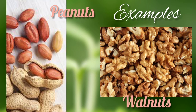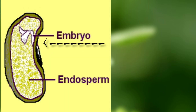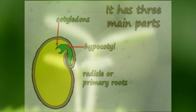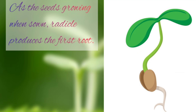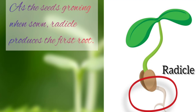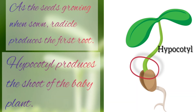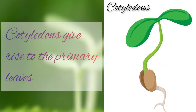Look into the picture — these are seeds we eat. Third, embryo. The next and most important part of a seed is the embryo. Embryo has everything that a seed needs to grow into a new plant. It has three main parts: cotyledins, hypocautyl, and radicle or primary root. As the seed starts growing when sown, the radicle produces the first root, hypocautyl produces the shoot of the baby plant, and cotyledins give rise to the primary leaves.